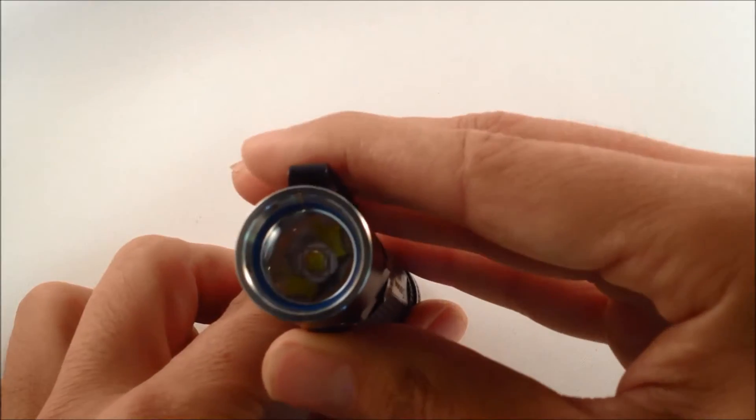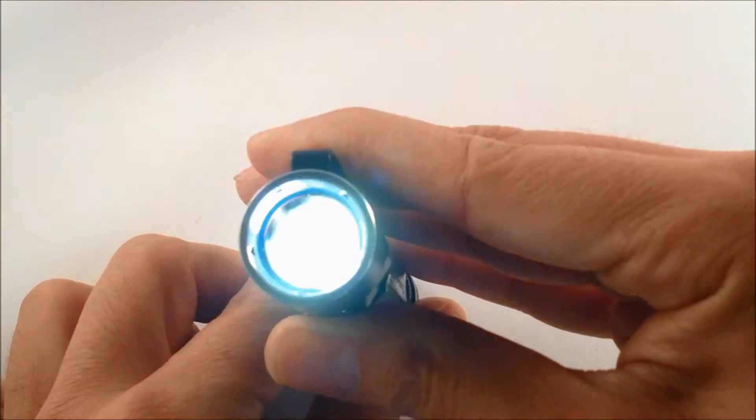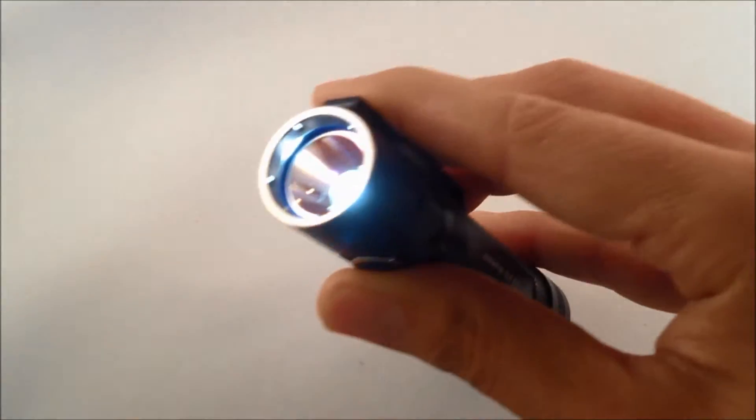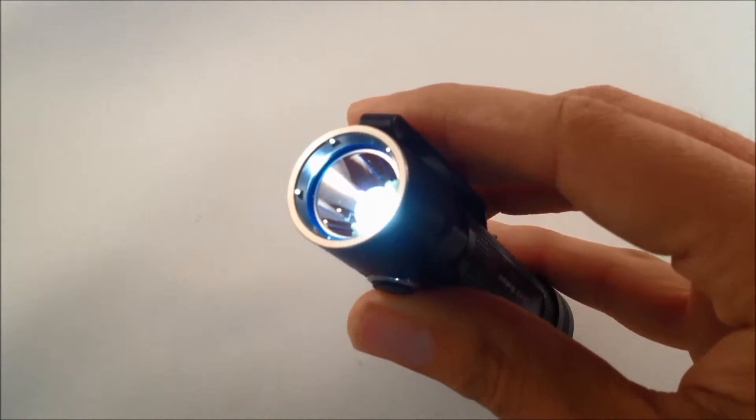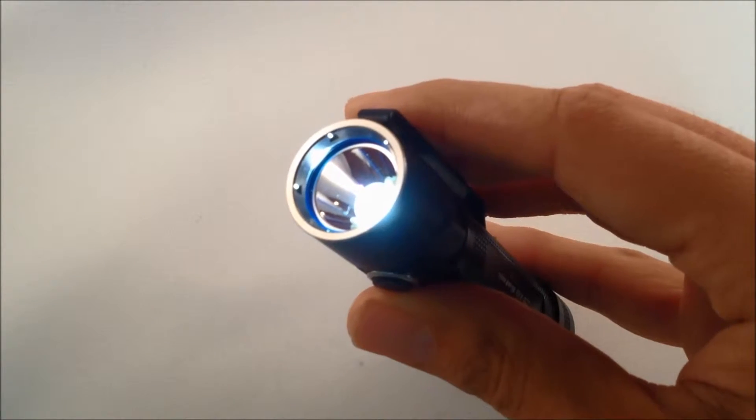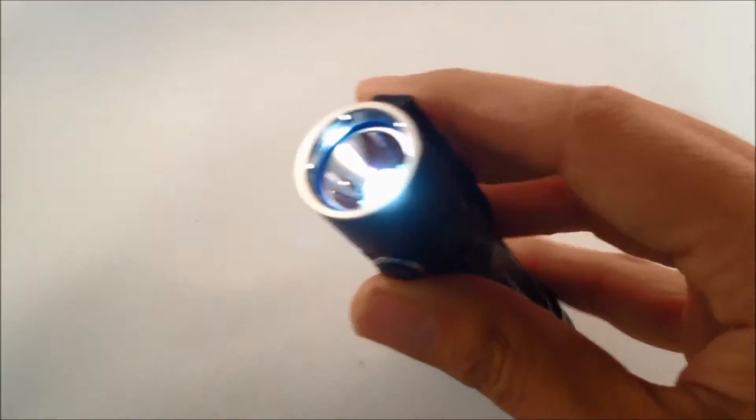When the light is in its off position, if I hold down the light, I'm going to enter moonlight mode. That's its lowest output setting. In this case, that's 0.5 lumens.